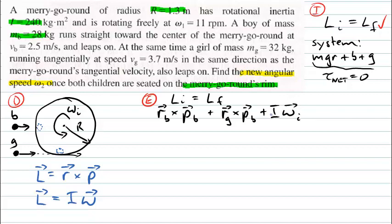This expression has the vector nature of angular momentum explicitly indicated. If you use your right-hand rule to determine where these components point, they will all point out of the page as this diagram is drawn. If you're not sure about that, you should go and practice your right-hand rule for angular momentum.